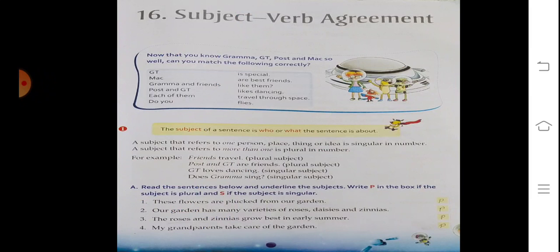For example: 'friends travel' - plural form. 'GT and Post are friends' - plural form. 'GT loves dancing' - singular form. 'Does grandma sing?' - singular subject. Here we have singular and plural subjects.